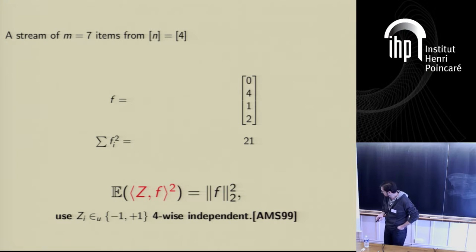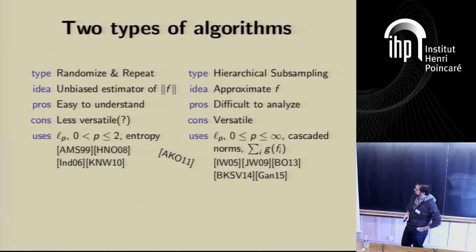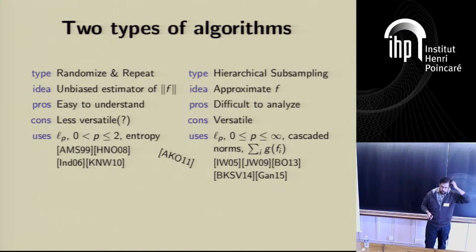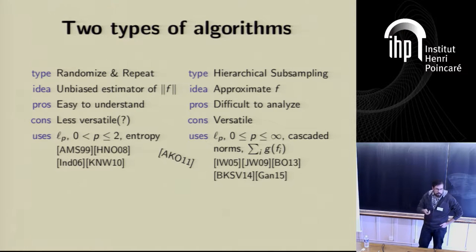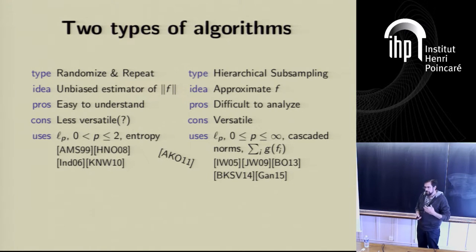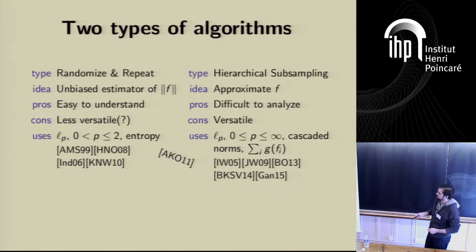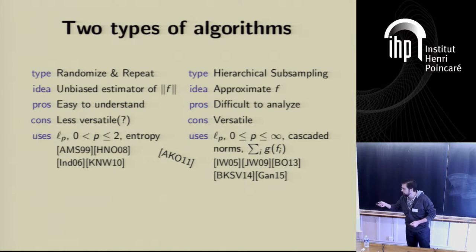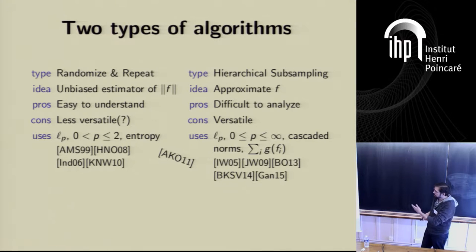The rest of this talk is about approximating different functions besides the sum of squares. For these problems, there are broadly two types of algorithms. The first type I call 'randomize and repeat': we inject some randomness into the stream, cook up an unbiased estimator for the quantity we're interested in, then repeat and take averages and medians to drive down the error. This has been successful, for example, for the sum of squares — I can replace the square with some power p less than or equal to two and have a similar algorithm.